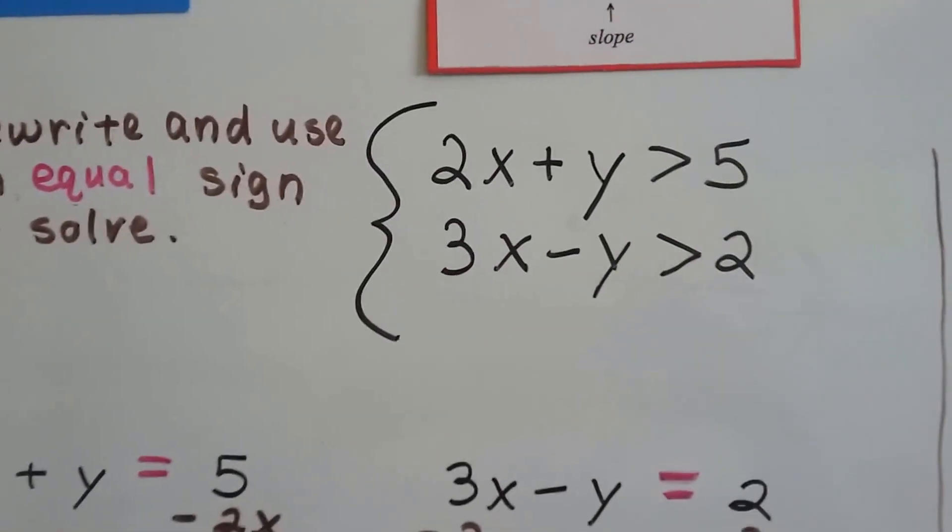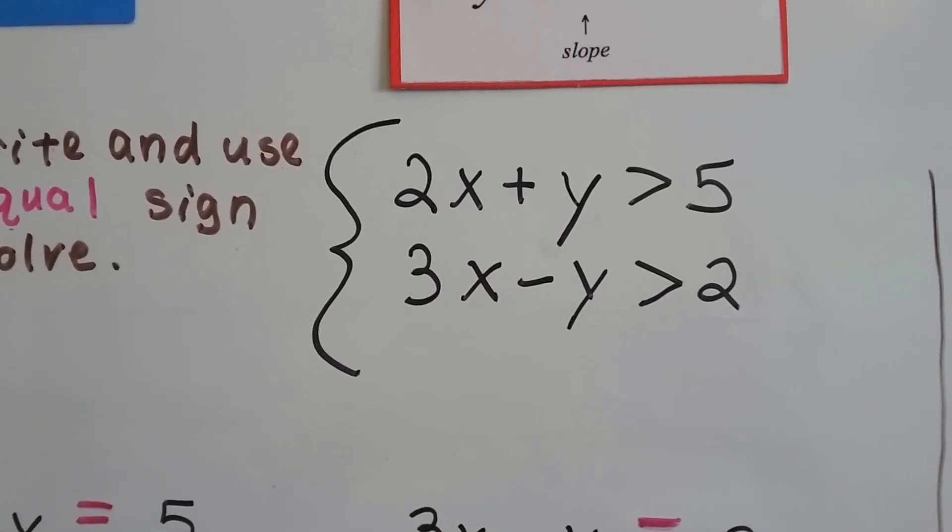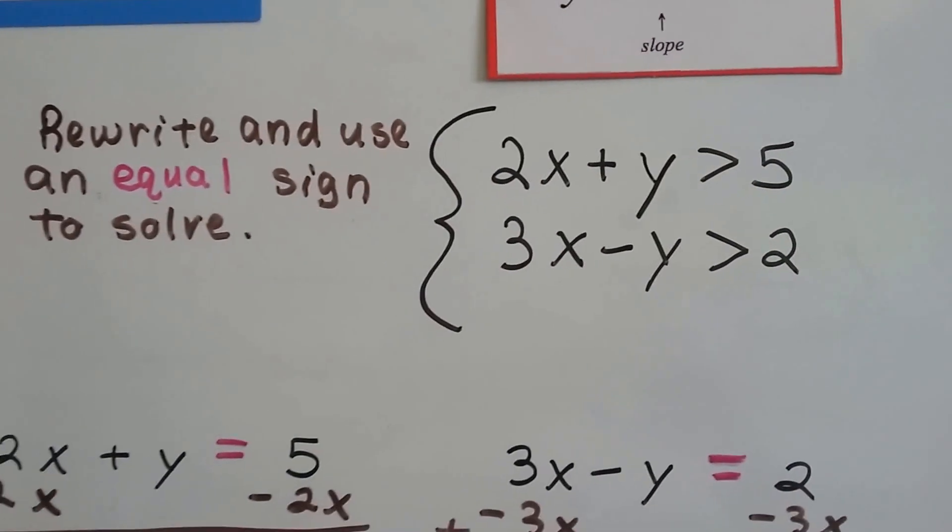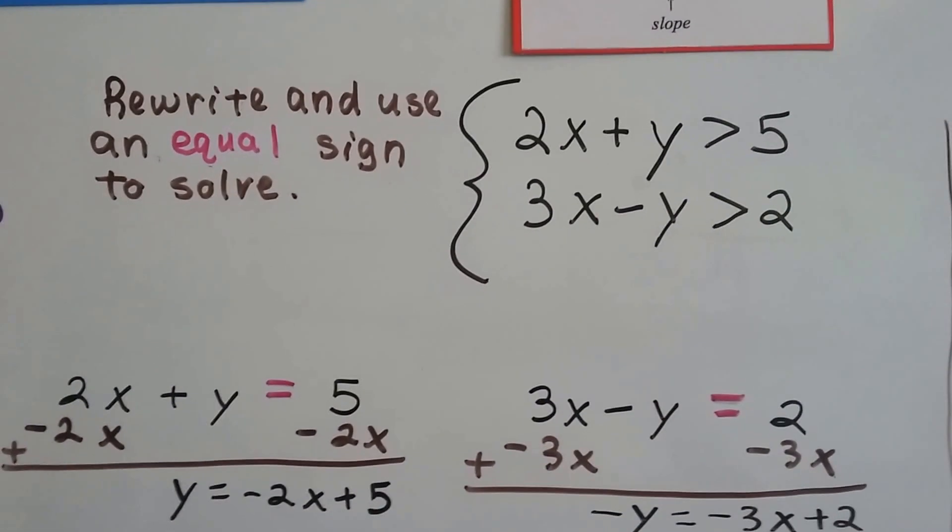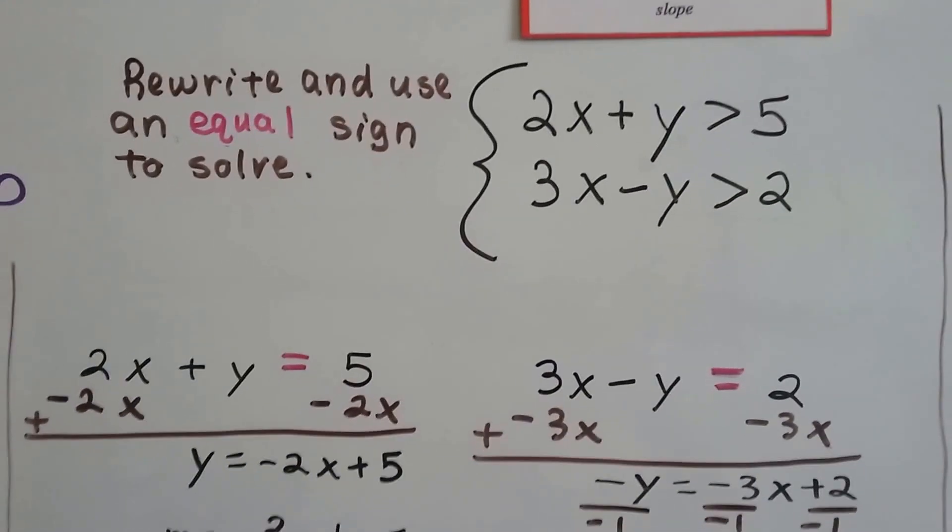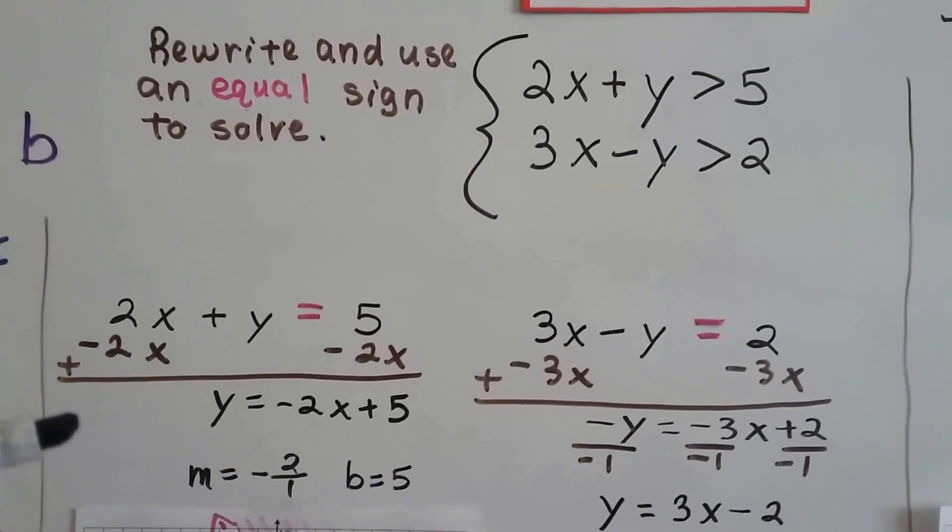Here's our first system of inequalities. 2x plus y is greater than 5, and 3x minus y is greater than 2. We're going to set it to equal and solve it that way. We're going to remove the inequality signs and put in equal signs. You should know how to do this by now.